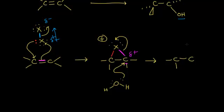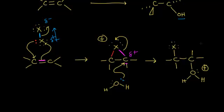Drawing the result: on the left carbon, the halogen now has three lone pairs of electrons. On the right carbon, it's now bonded to what used to be our water molecule — the oxygen is bonded to the carbon with still two hydrogens attached, and there's one lone pair on the oxygen giving it a plus one formal charge. Those electrons formed this bond between the carbon and oxygen.